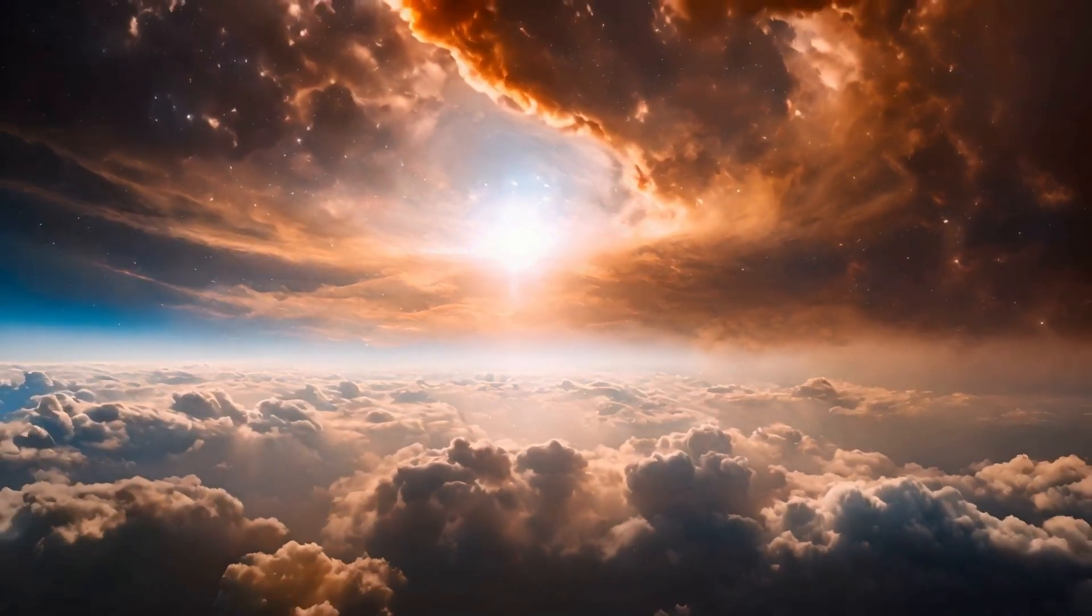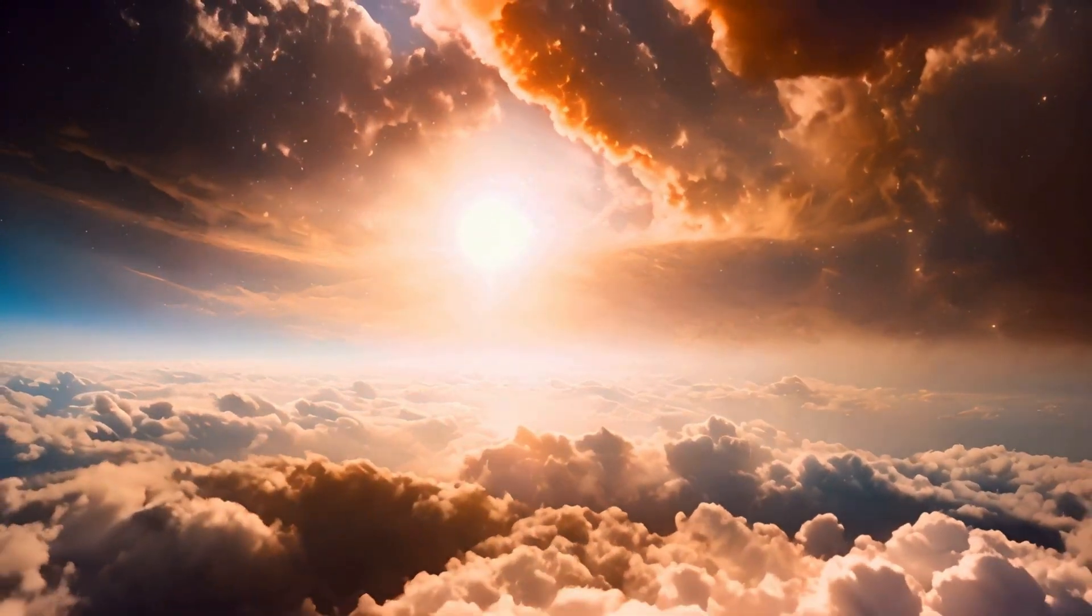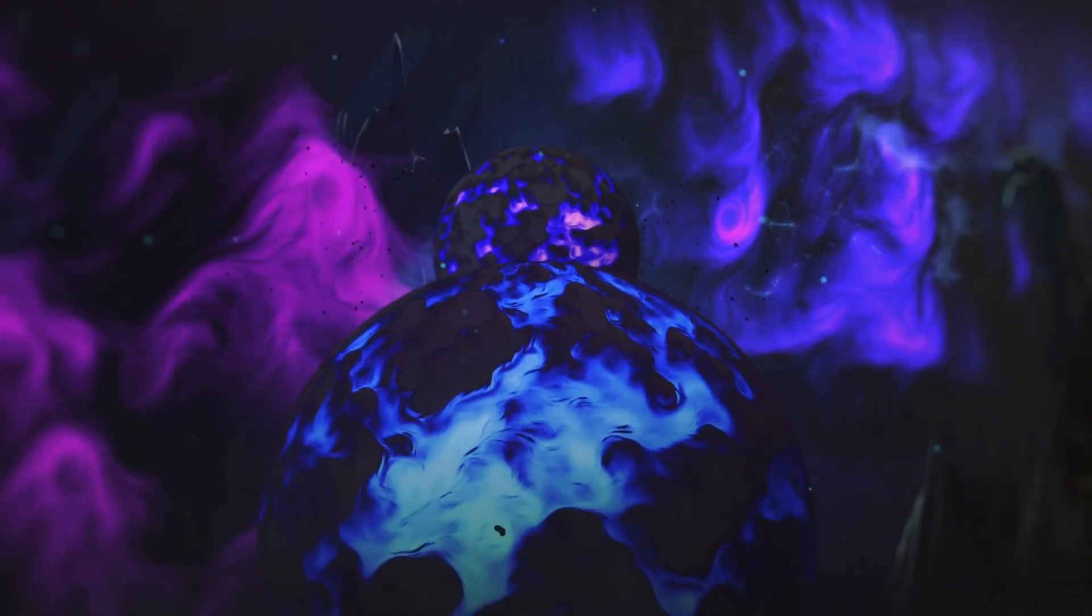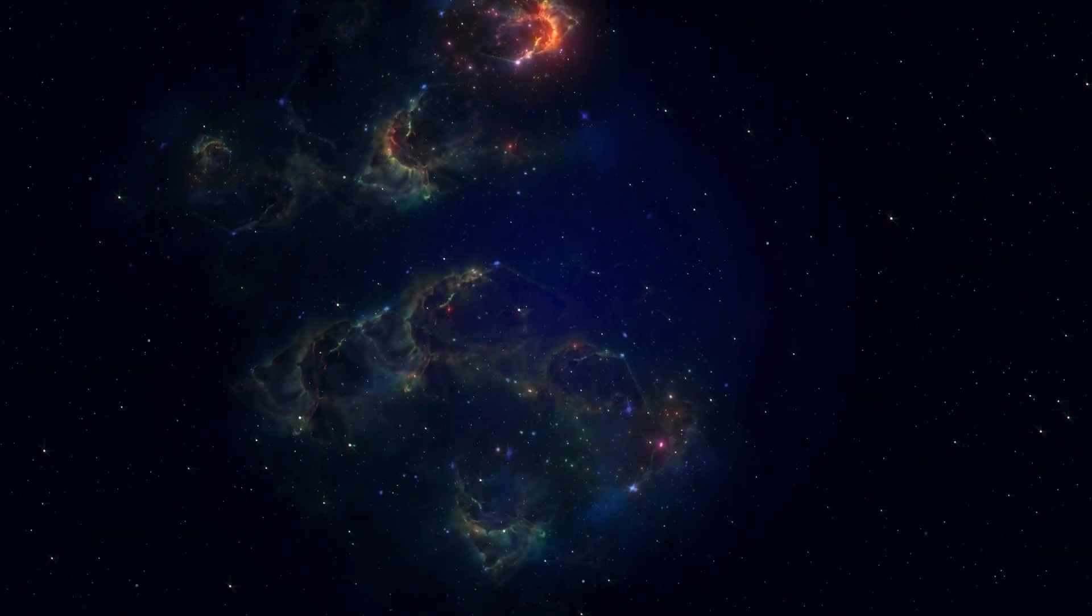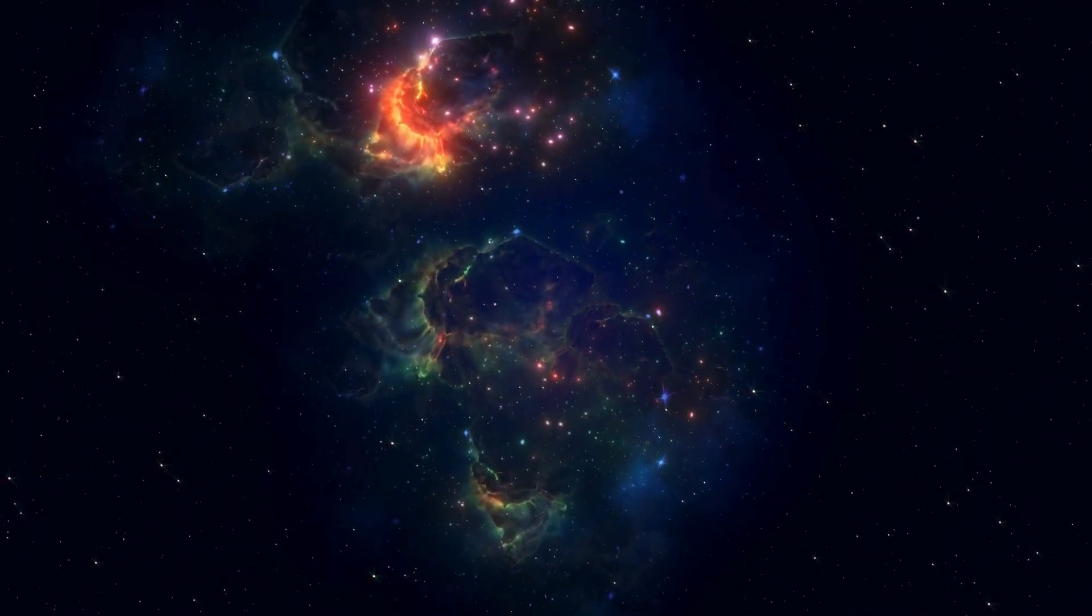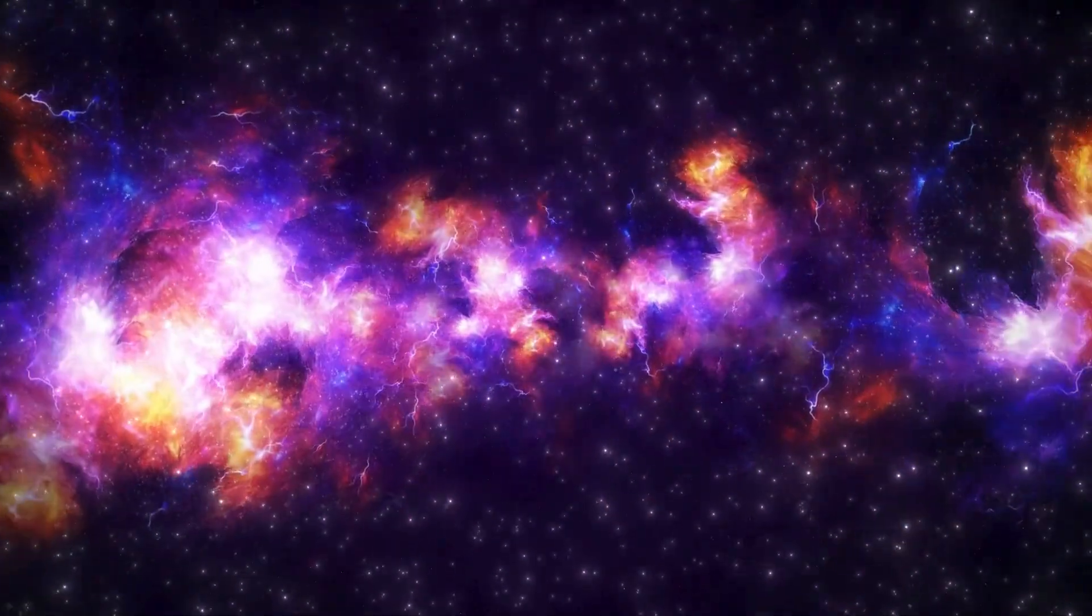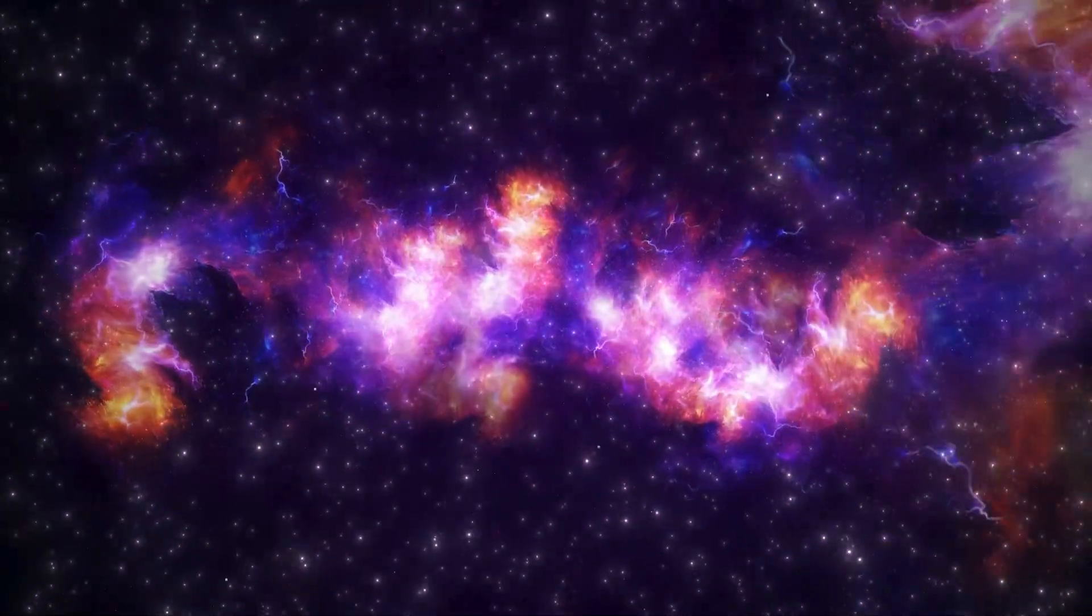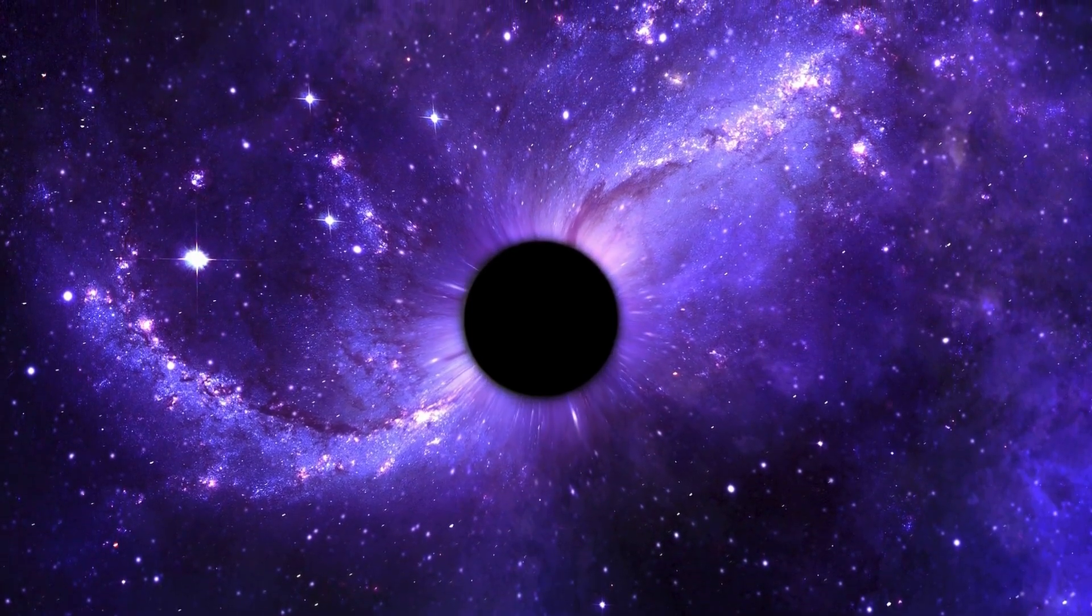Here's the thing, when we observe stars, we're not actually seeing them as they are in the present moment. The light we see from stars like Betelgeuse takes time to travel to Earth. Betelgeuse, one of the most fascinating stars in our night sky, is located approximately 725 light years away from Earth. This means that the light we observe from it today actually began its journey toward us around 725 years ago. In other words, when we look at Betelgeuse through telescopes or even with the naked eye, we are witnessing the star as it was centuries ago, not as it exists in the present moment.